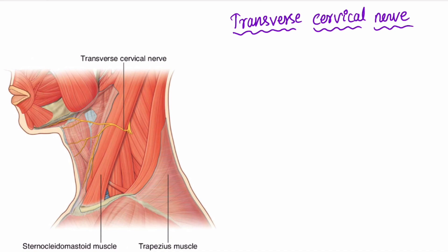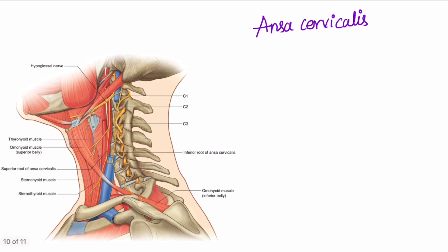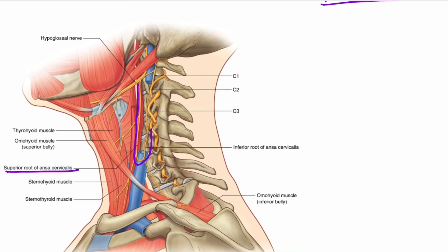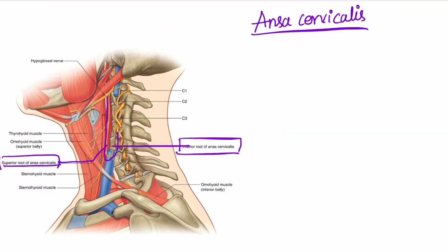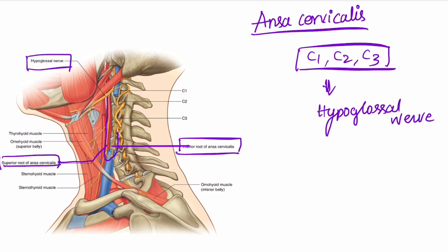The transverse cervical nerve arises from the anterior rami of C2 and C3 of the cervical plexus; it is a cutaneous branch. The ansa cervicalis forms a loop arising from C1, C2, and C3 fibers of the cervical plexus. It joins the hypoglossal nerve. That is all about the nerves of the anterior triangle.